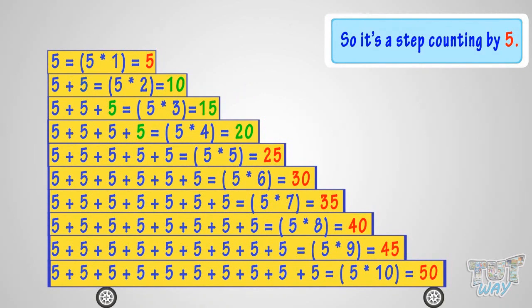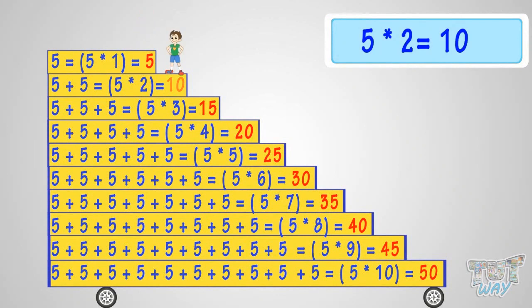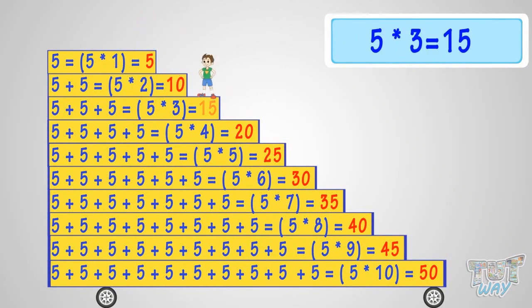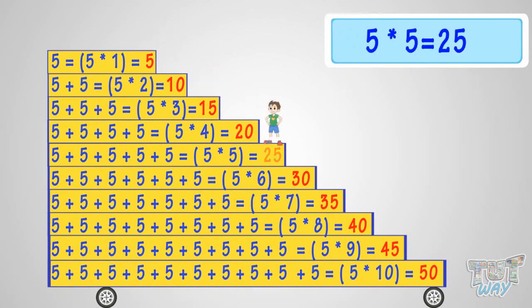So, let's revise what we learned. 5 times 1 is 5. 5 times 2 is 10. 5 times 3 is 15. 5 times 4 is 20. 5 times 5 is 25.